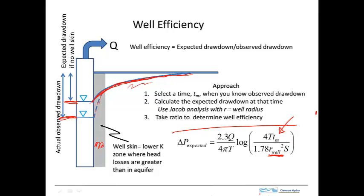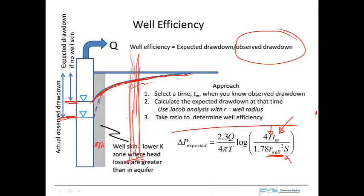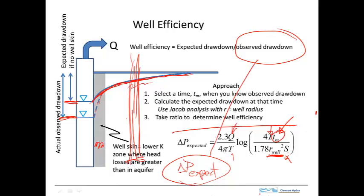The time here is the elapsed time for a data point used to determine the observed drawdown. We put in the observed time and the radius of the well. The transmissivity T and storativity S are calculated using a monitoring well out in the formation — the head in the monitoring well is not affected by the skin. So T and S reflect only formation properties. We then calculate the expected drawdown and take the ratio of that to the observed drawdown, giving us the well efficiency.